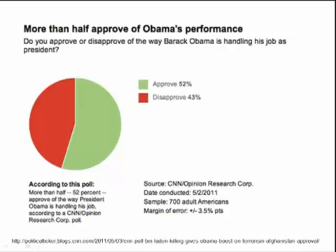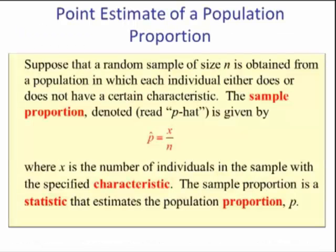If we were to add and subtract 3.5% from this 52%, we would have our confidence interval, but we'll talk more about that later on. Point estimate for a population proportion: Suppose that we have a random sample of size n obtained from a population in which each individual does or does not have a certain characteristic. The sample proportion, the way you read it is p hat, is given by p hat equals x divided by n, where x is the number of individuals in the sample with the specified characteristic.